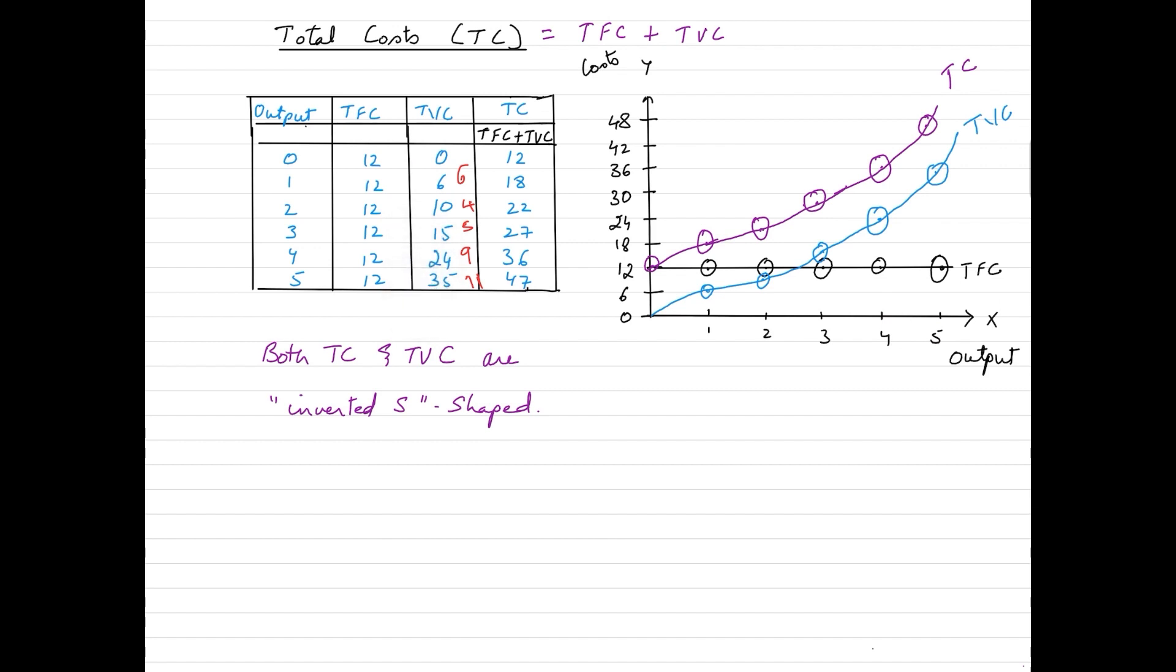When we interpret this diagram, we need to see that the fixed cost curve which is this black curve is a horizontal line parallel to x axis indicating that fixed costs are constant throughout the levels of output.